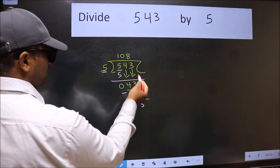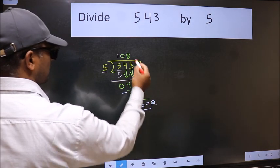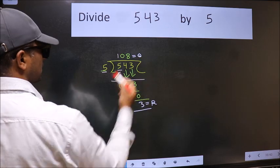No more numbers to bring down. So we stop here. This is our remainder and this is our quotient.